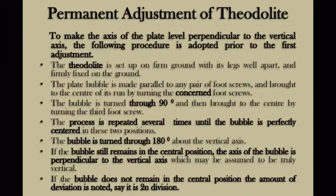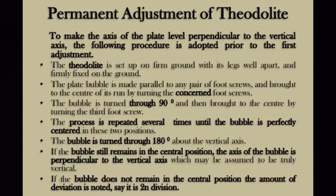For the first adjustment, the theodolite is firmly set on the ground using a tripod. Then the plate bubble tube is kept parallel to any pair of foot screws. Next, rotate 90 degrees so it will be perpendicular to the previous position, then adjust the third screw. This process is repeated several times. After that, turn the bubble 180 degrees about the vertical axis and check if the bubble remains centered.